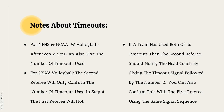Notes about timeouts: for NFHS and NCAA women, after the end signal you can show the first referee the number of timeouts used. For USA Volleyball, the second referee will only confirm the number of timeouts used in the confirmation step — the first referee will not. If a team has used both of its timeouts, the second referee should notify the head coach by giving the timeout signal followed by the number two, and confirm this with the first referee using the same signal sequence.